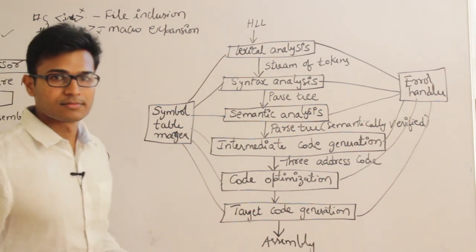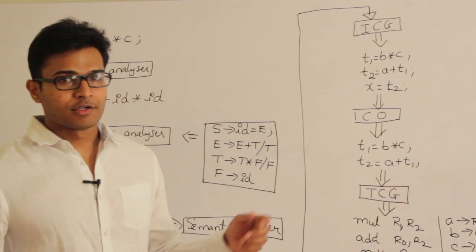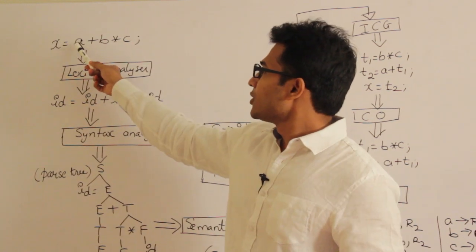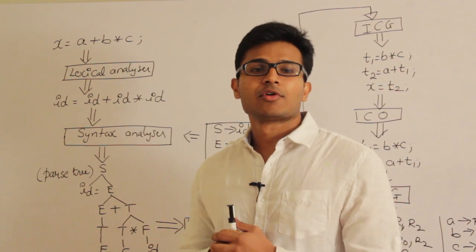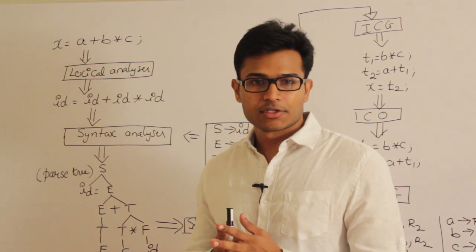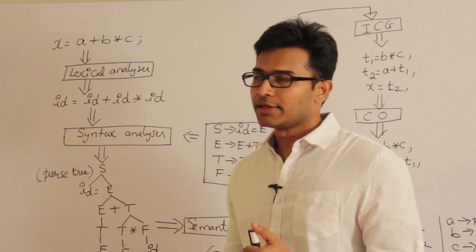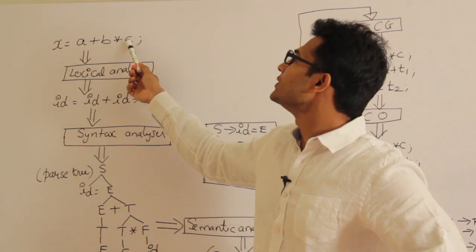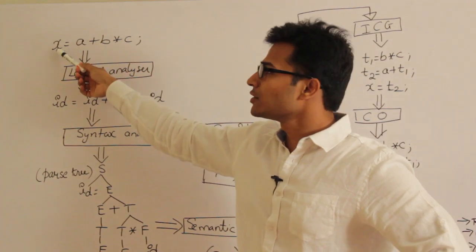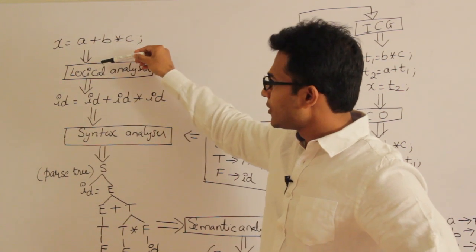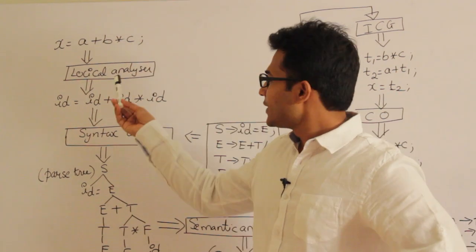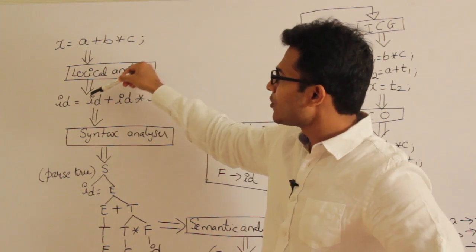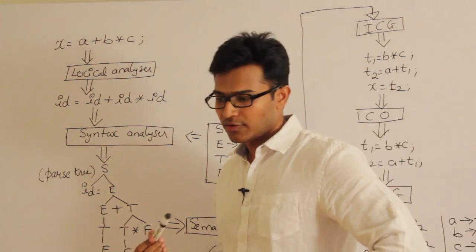Let's take an example and see how all the phases work. The example is: x equal to a plus b into c. That is the source program — just one line, x equal to a plus b into c, meaning you have to multiply b and c, then add a, and store the result in x. First, this will be given to the lexical analyzer. Once the lexical analyzer receives the input, the input is converted into a stream of tokens. That is the main purpose of the lexical analyzer.